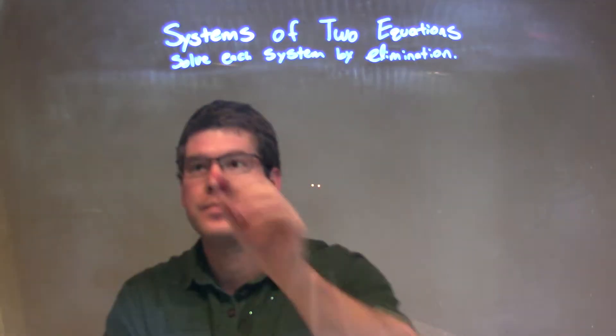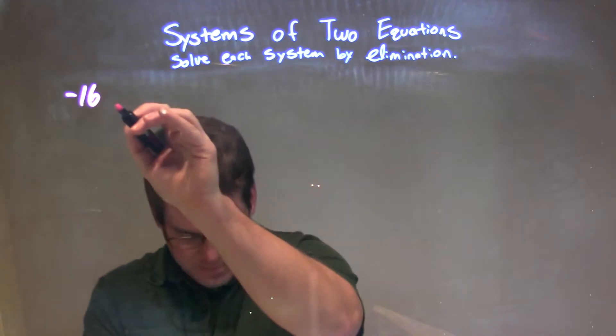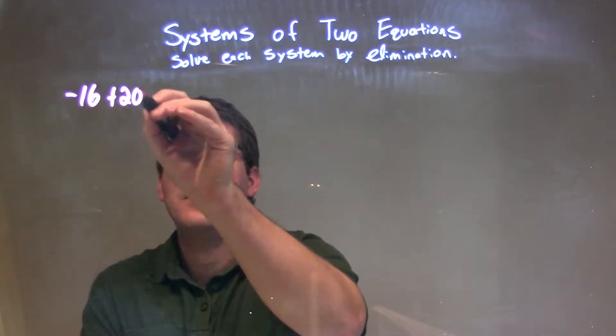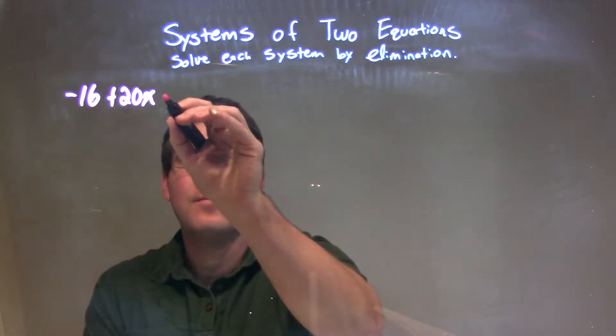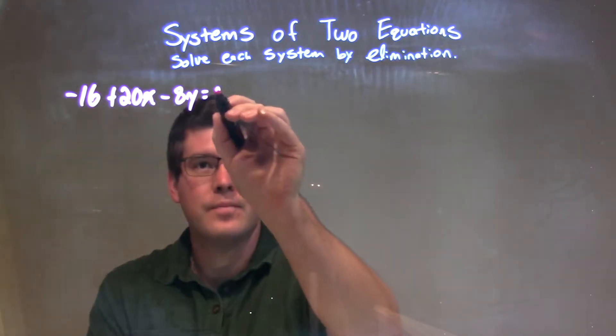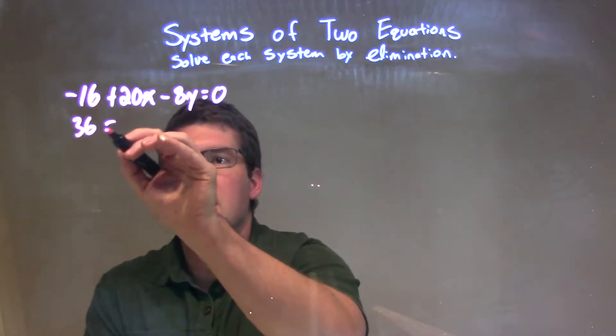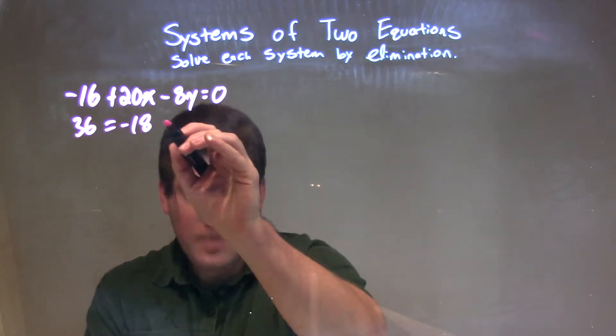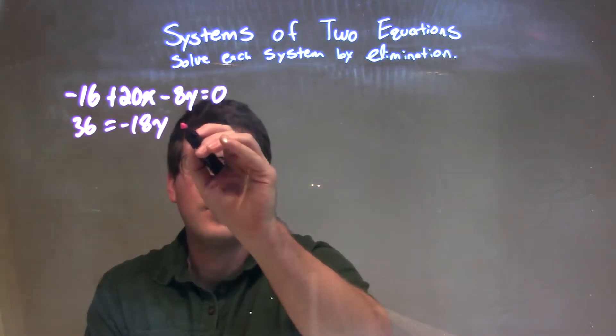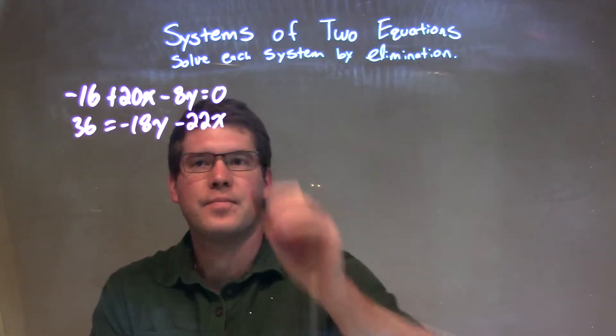If I was given the system negative 16 plus 20x minus 8y equals 0, and 36 equals negative 18y minus 22x.